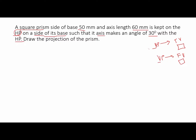If you make any mistake during the first stage the whole problem will be wrong. Remember this information throughout the semester. We can draw the square either as a regular square or in a diamond shape — it depends on one condition: if the corner of the square lies on the HP, go for the diamond shape. For any other condition we can go with the regular shape, with two edges perpendicular to the XY line.